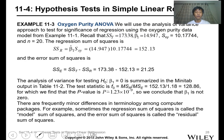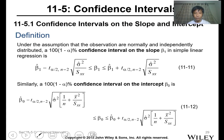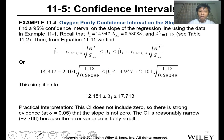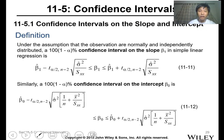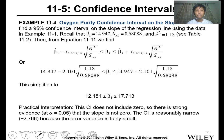For confidence intervals on the slope and intercept, you just follow this formula. This is for the intercept, this is for the slope. This is two-sided; it could also be one-sided, but usually it's two-sided. For the oxygen purity, input all the data and you have the confidence interval.